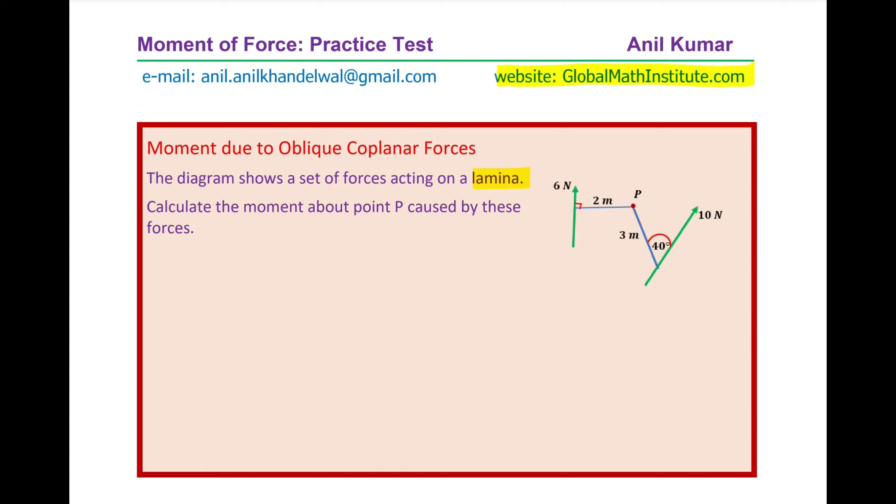Now, moment is basically force into distance, right? So let's write down what moment is. Moment at P will be due to these two forces, due to force 6 Newton and also due to 10 Newton. Moment basically is defined as a cross product of force with the distance.